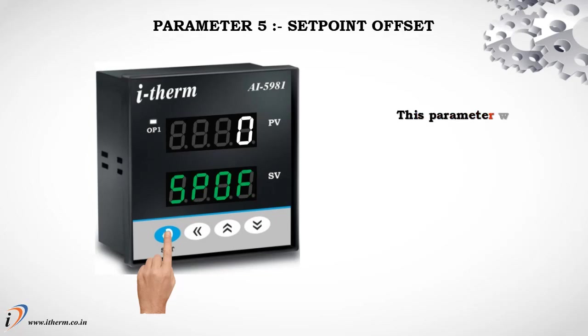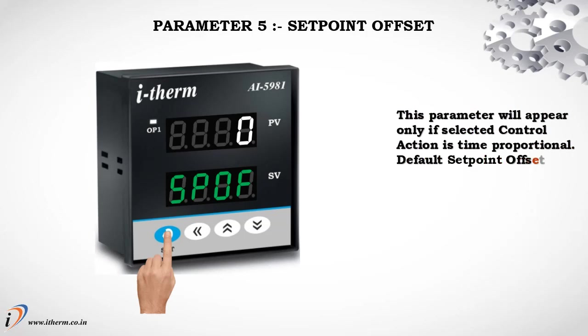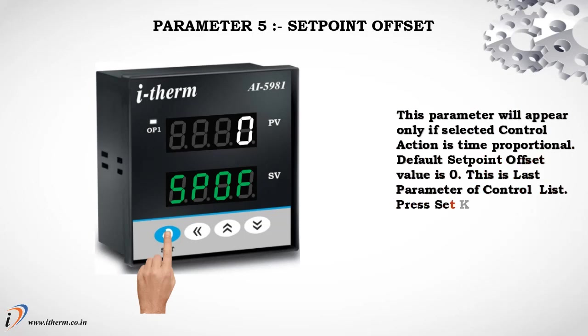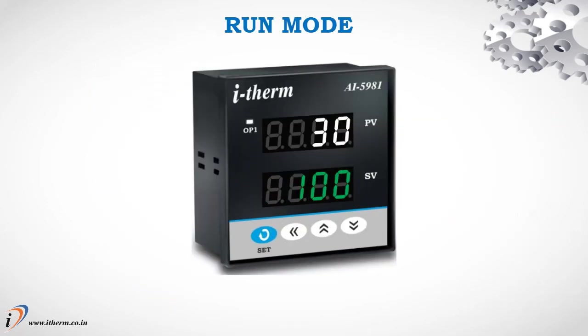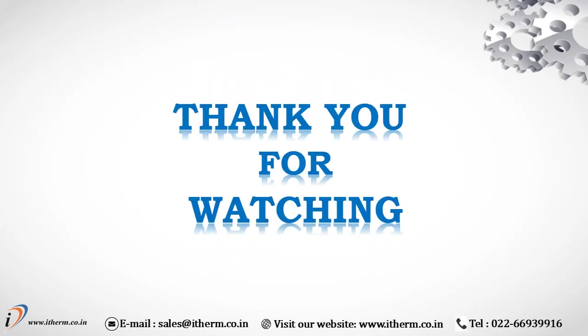Parameter 5: Set Point Offset. This parameter will appear only if the selected control action is time proportional. This concludes the Run Mode parameters. Thank you for watching.